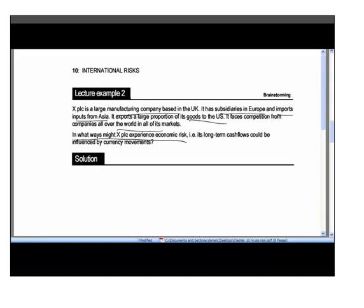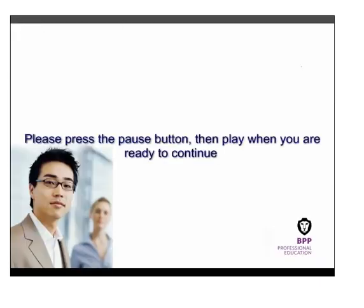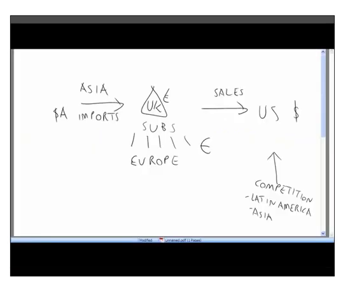First, XPLC has subsidiaries in Europe earning profits in euros. If the euro depreciates against sterling, the value of those profits is reduced when translated back. For example, €100 million from subsidiaries will be worth less in sterling if the euro falls — so that reduces profits from subsidiaries.